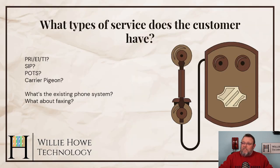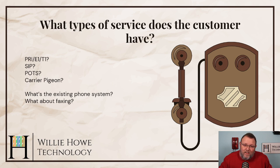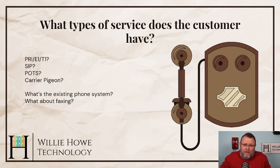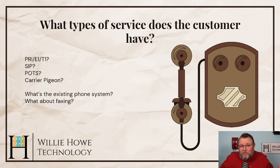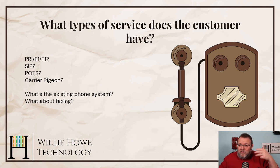The next thing we need to be concerned with is what types of service does the customer have? For example, we are currently quoting somebody who has E1s — if you don't know, that is the European version of a T1, so we have to have special hardware for that. So does the customer have PRIs, E1s, T1s, SIP, POTS lines (plain old telephone service), or something else entirely?